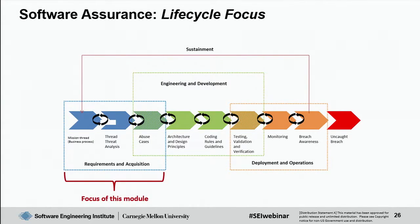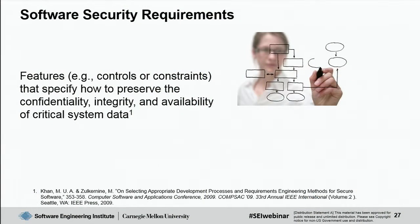We're looking at the very early part of the life cycle — defining requirements and focusing on early acquisition aspects of software. Software security requirements are features such as controls or constraints that specify how to preserve the confidentiality, integrity, and availability of critical data in the system. You'll hear me reference CIA — confidentiality, integrity, and availability — multiple times, as that forms the goals of what we're trying to do with software security requirements.